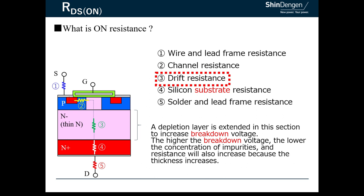Whereas, the channel resistance determines most of the RDS(ON) in a low voltage MOSFET because the drift layer resistance is small.